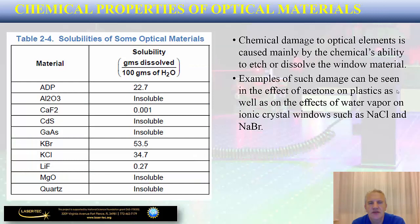In addition to thermal properties, chemical properties of optical materials can also affect the performance of your optical system and must be paid close attention. Chemical damage to optical elements can be caused by different chemicals — for example, the effects of acetone or plastics, as well as the effects of water vapor on ionic crystal windows such as different types of salt.